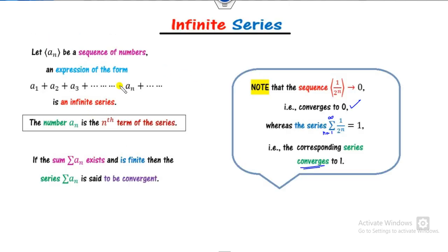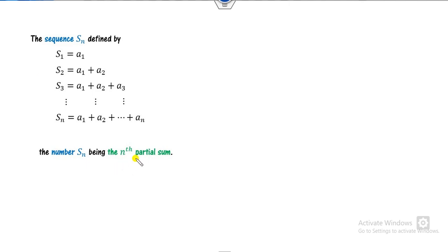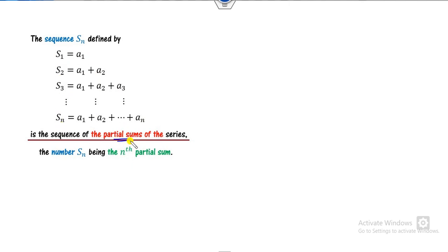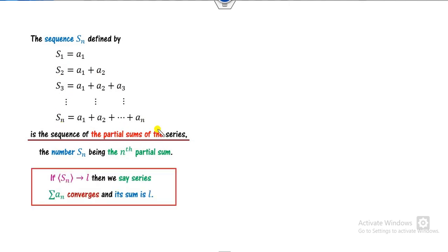From this series, if we define the nth partial sum: S_1 is A_1, S_2 is A_1 plus A_2, S_3 is the sum of the first three terms, and so on. This sequence S_n is called the partial sum sequence. If this partial sum sequence is convergent, then we say the series is also convergent. This is the necessary condition for series convergence — when the nth partial sum sequence is convergent.